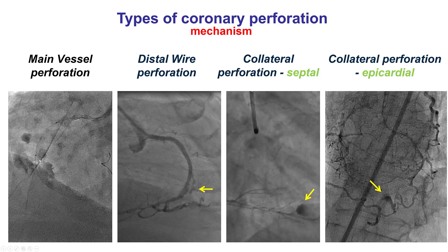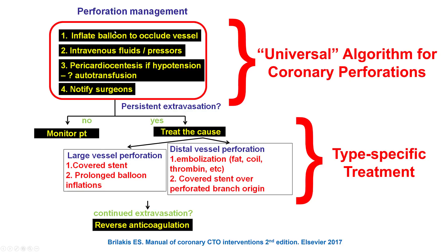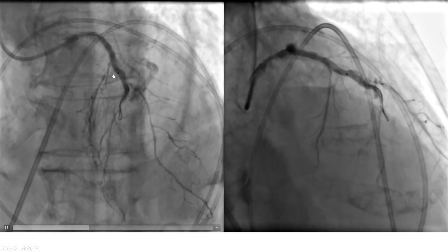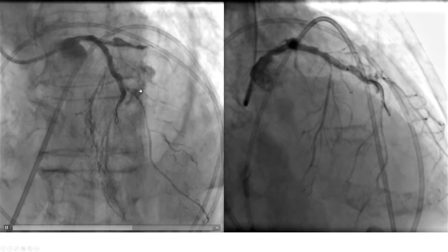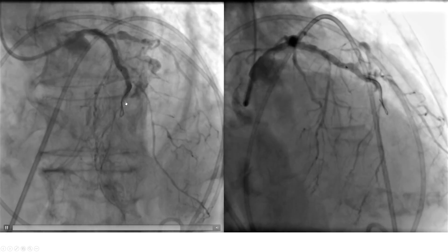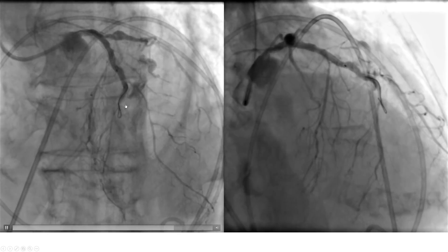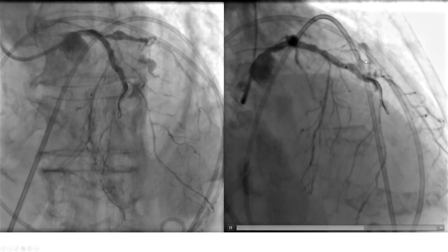At this point we had a main vessel perforation. Initially we thought it was from the wire, but retrospectively it may have been because of stent placement into a diffusely diseased and calcified vessel. Treatment is to inflate a balloon to occlude the vessel, perform pericardiocentesis for tamponade, and notify the surgeons — who had already declined surgery. When balloon inflation did not seal the perforation, it eventually became apparent the extravasation was coming from the LAD, not the diagonal, at the distal edge of the previously placed stent — a fairly significant perforation with continued extravasation.